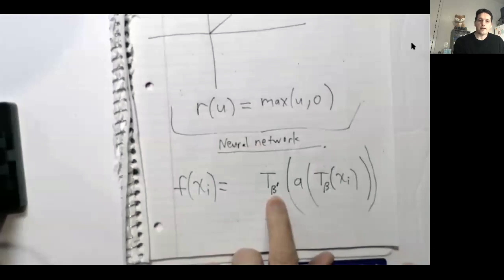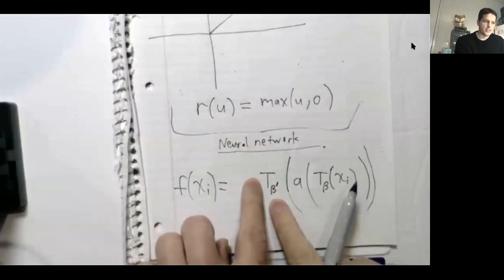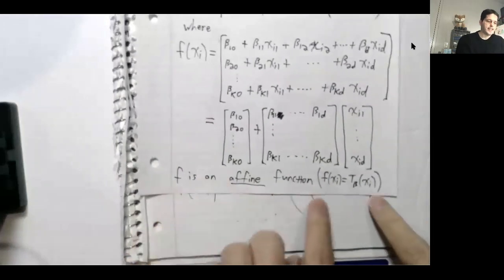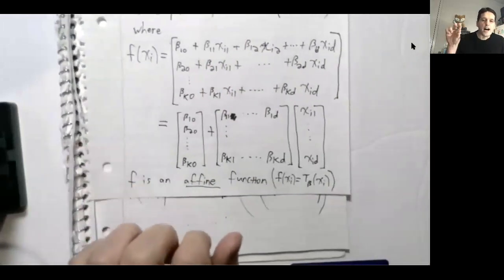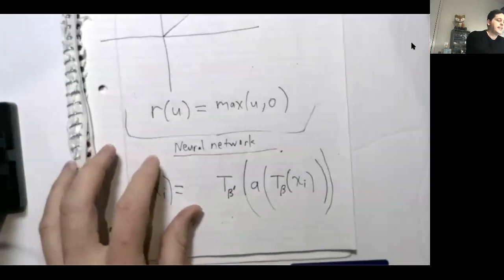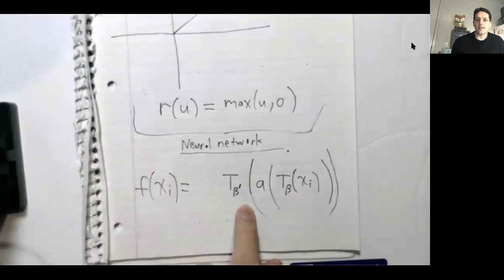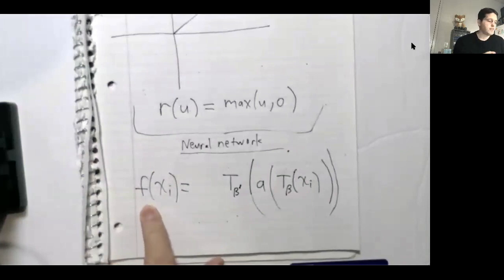Beta prime is a column vector containing all the coefficients that determine this new and different affine function. The affine function T_beta is determined by all its coefficients — you can think of these as knobs you can tune to maximize the accuracy of your neural network. T_beta' is just a different affine function with a different set of coefficients. When we make this choice of f, what we have is called a neural network. This is all a neural network is.